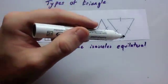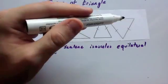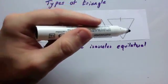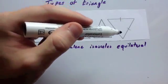And the last type of triangle is an equilateral triangle. In an equilateral triangle, all three sides are the same length, and all three angles are the same.